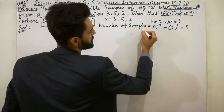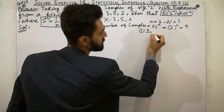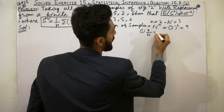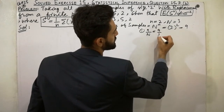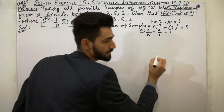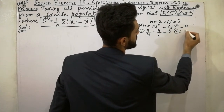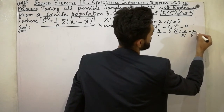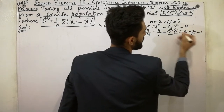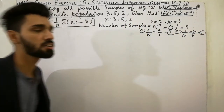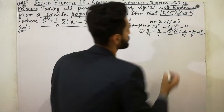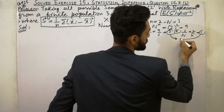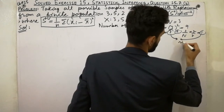We list all 9 samples. Since we sample with replacement, repetitions like (3,3) and (1,1) are allowed. The samples are enumerated by combining each value with every other value including itself.